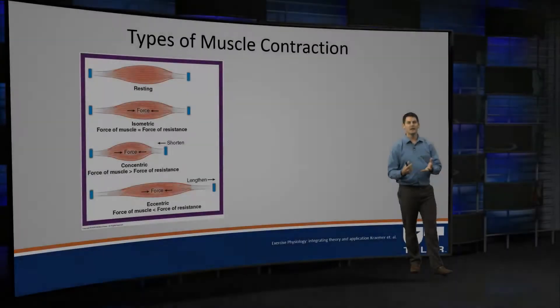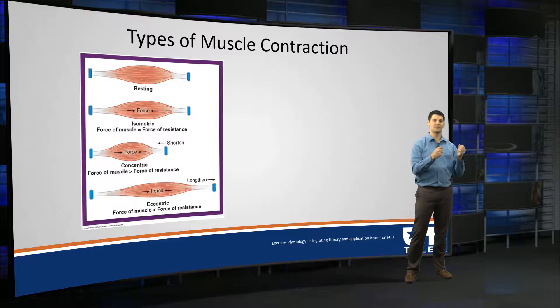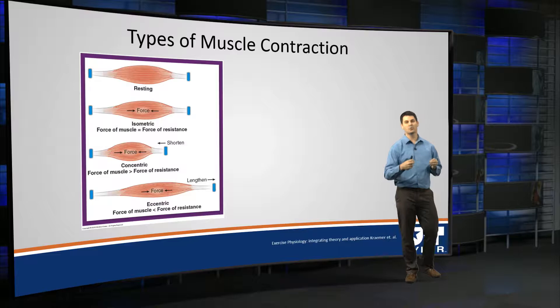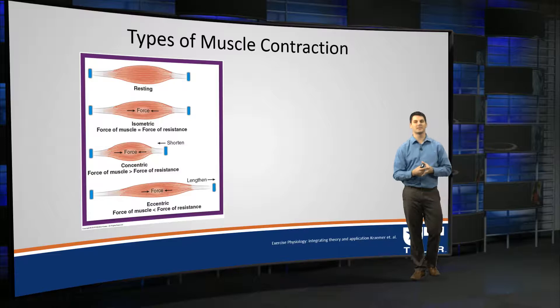In the previous video, we discussed how we monitor the amount of force that we're producing with the Golgi tendon organ, and how we understand the length or positioning of skeletal muscle with muscle spindles. So now we'll move out of proprioception and into types of muscle contraction.